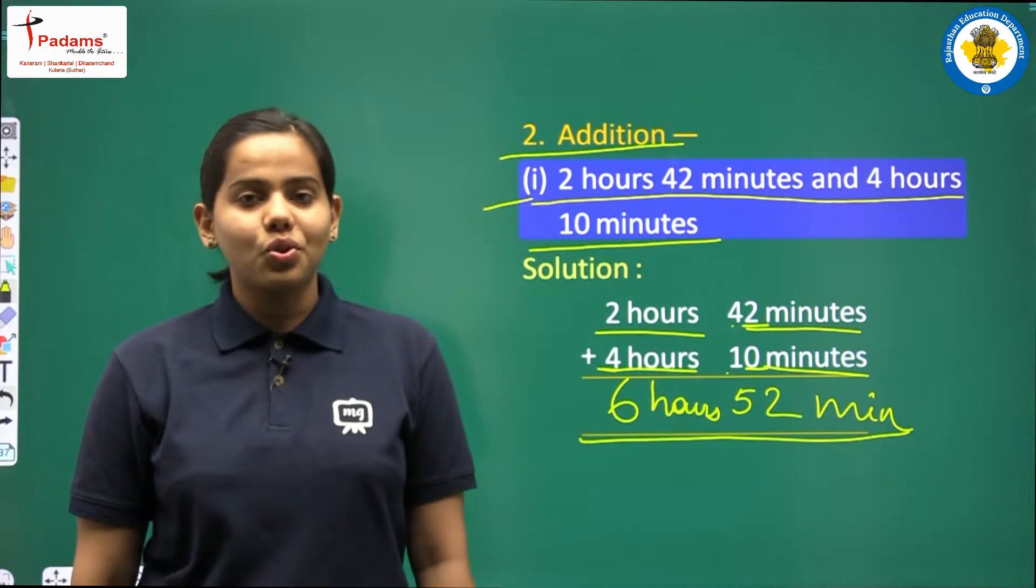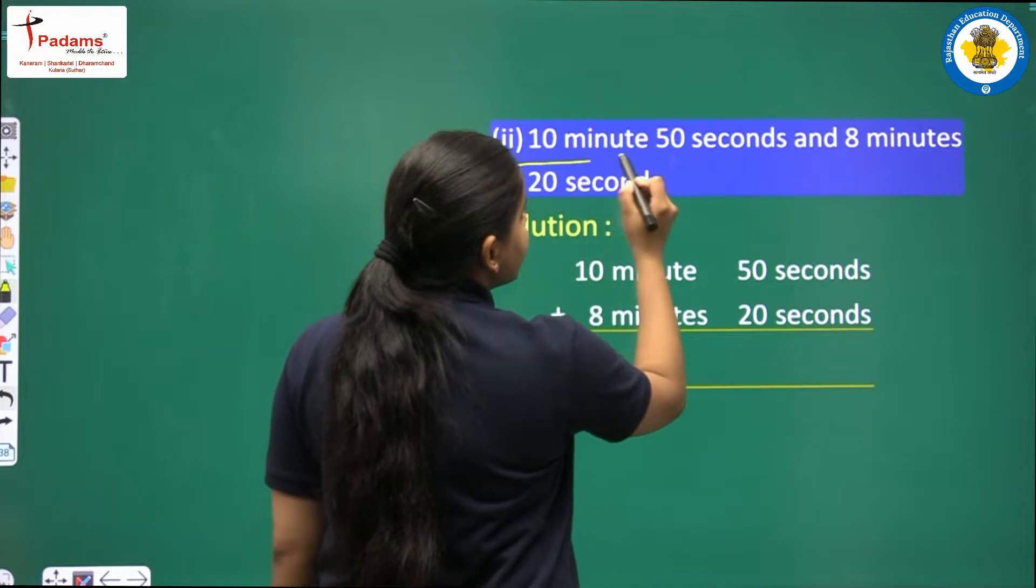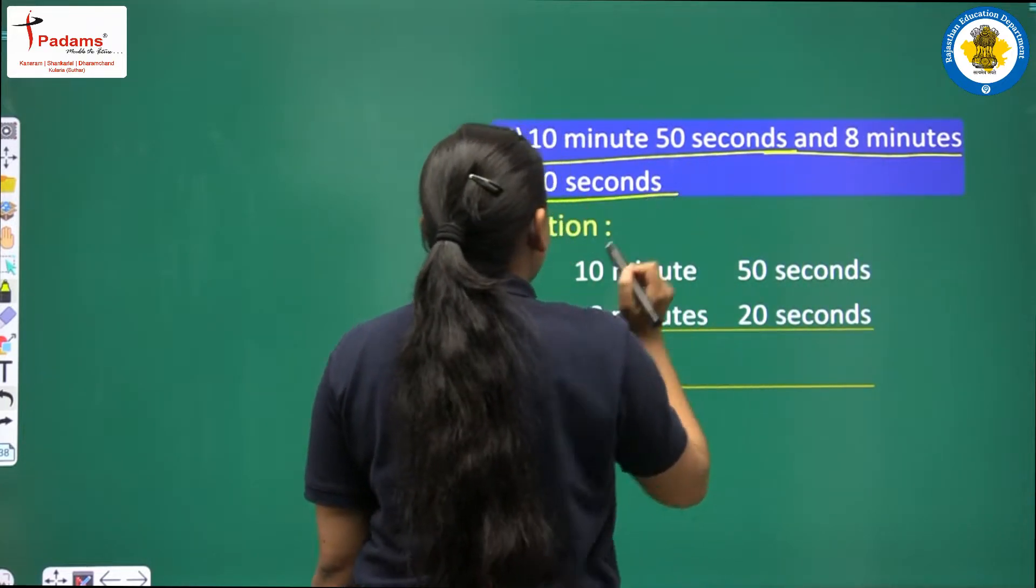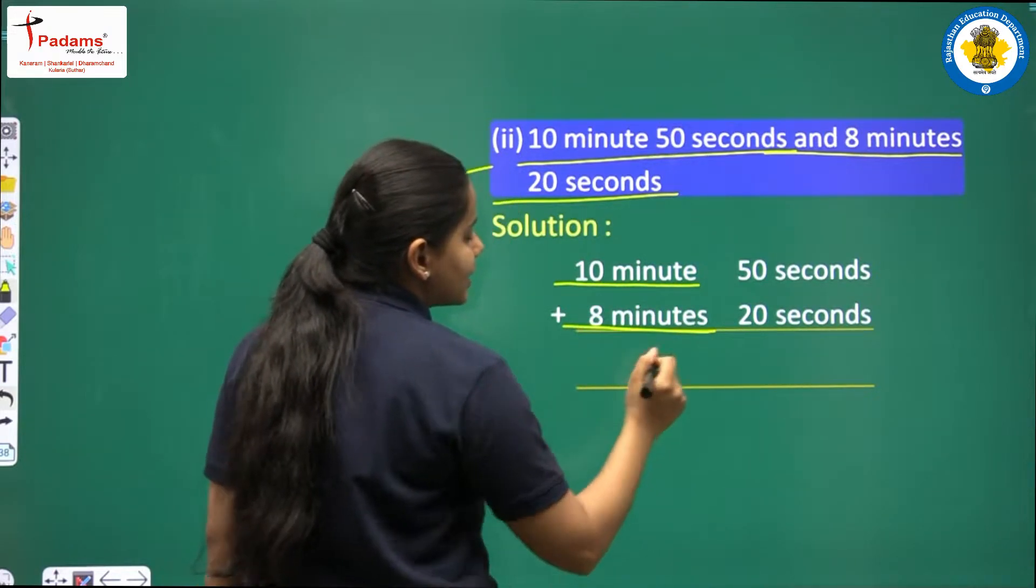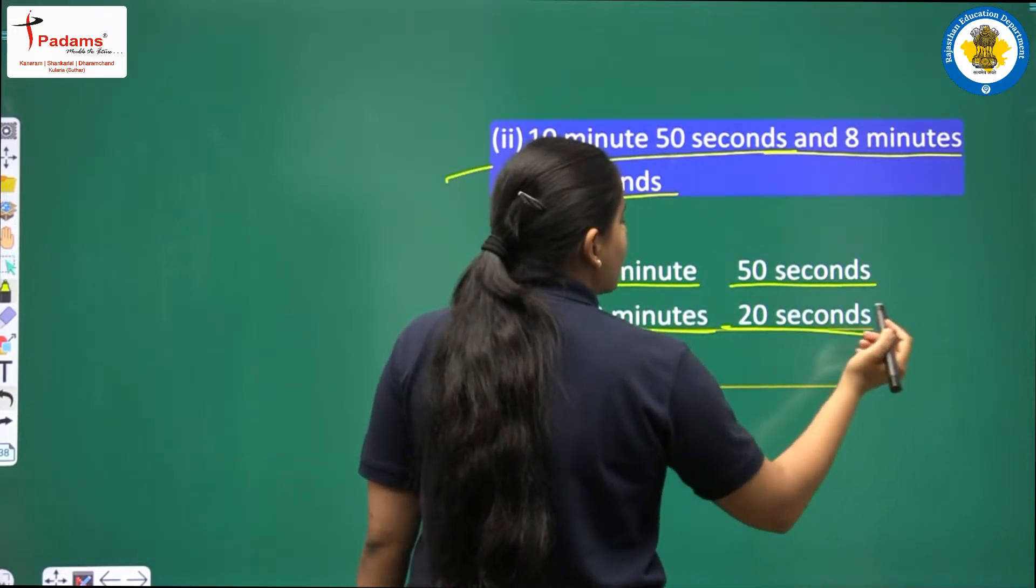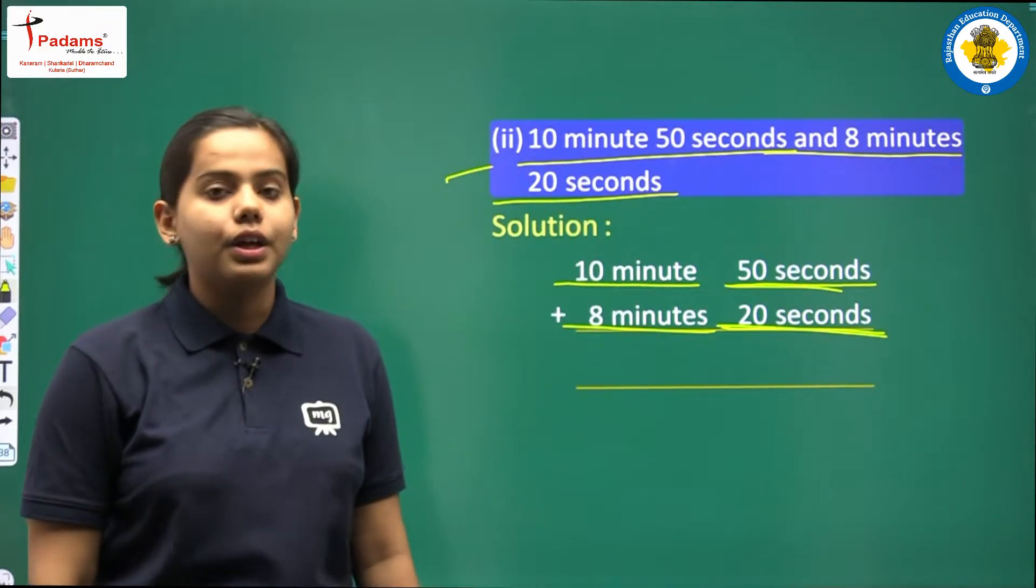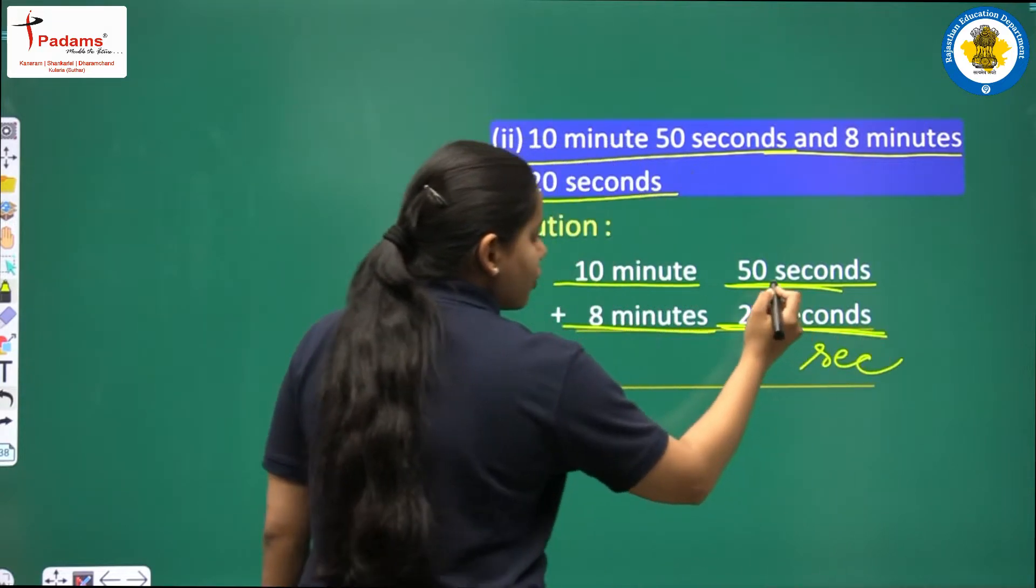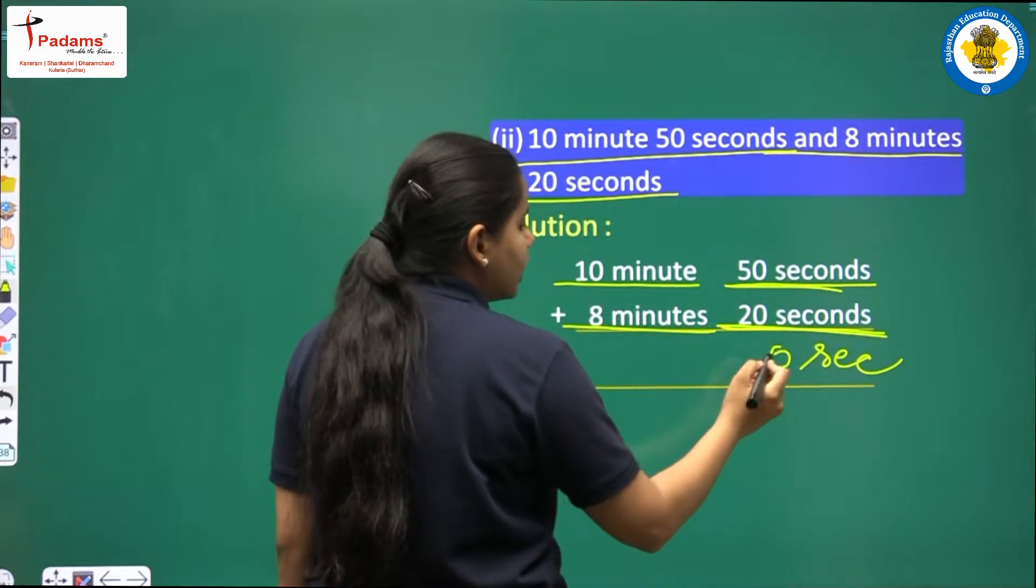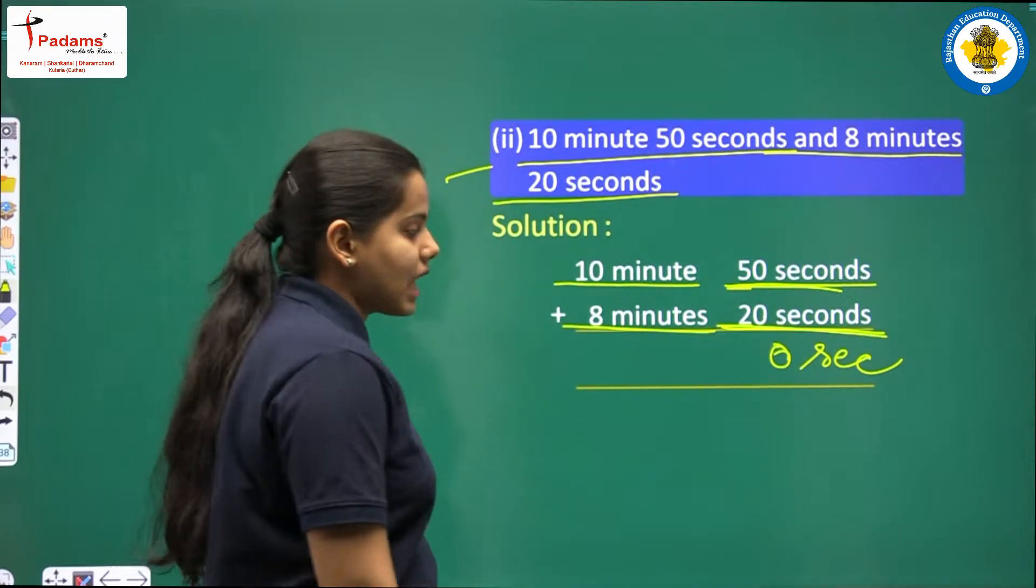Now second part is 10 minutes 50 seconds and 8 minutes 20 seconds. So first we have written 10 minutes and 8 minutes. Then in the next column, we have for seconds, 50 seconds and 20 seconds, we have to add here. So now let us start with the seconds column. Zero plus zero, we get only 0. Then we have 5 plus 2, 5 plus 2 is 70.